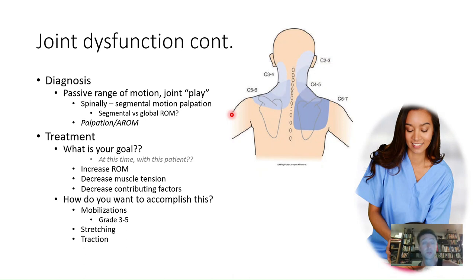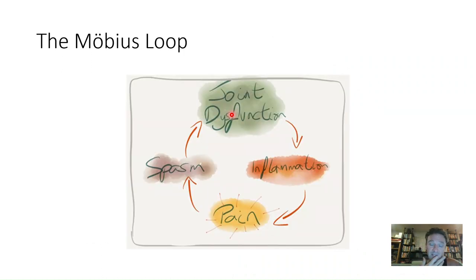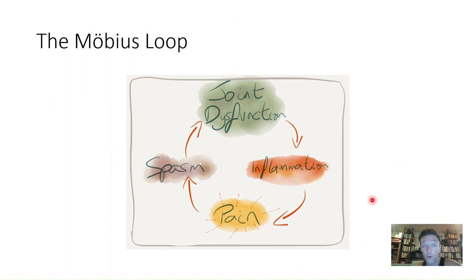Treatment goals for joint dysfunction include increasing range of motion, decreasing local tension, decreasing contributing factors, and working on posture. Mobilizations, grades three through five, work really well and are the go-to approach. Stretching and traction are also excellent choices. I want to present what I call a Möbius loop: joint dysfunction leads to inflammation, which leads to pain, which leads to spasm, which leads to more joint dysfunction — and you can enter the loop at any point.